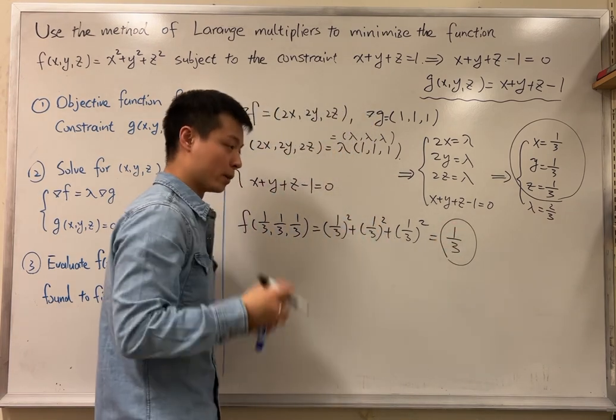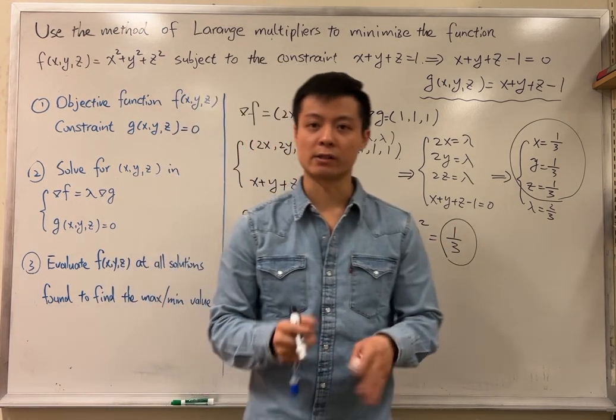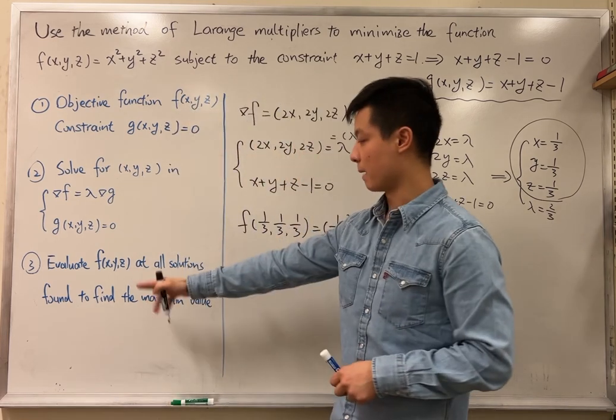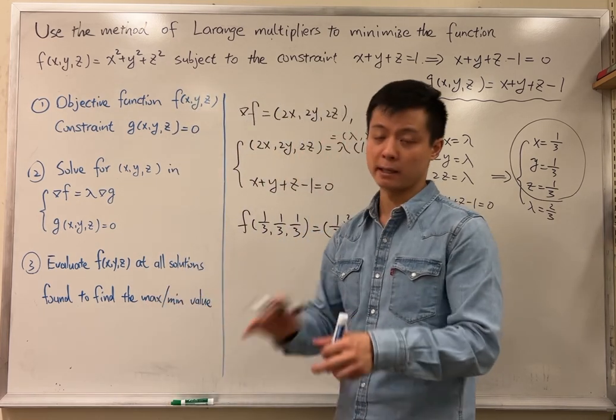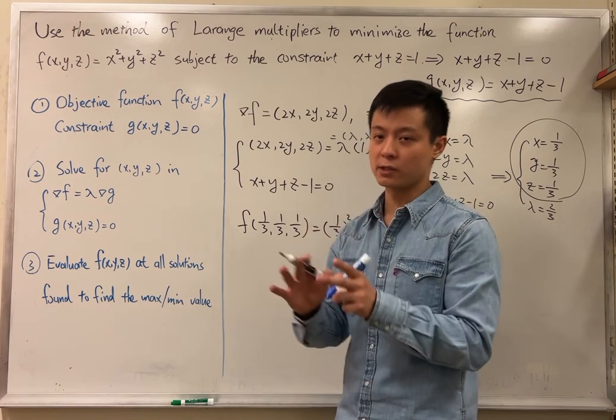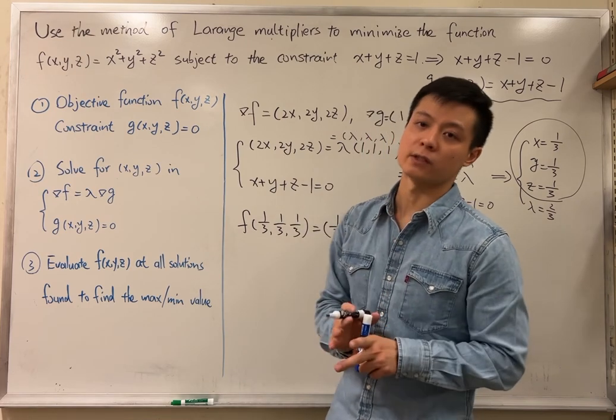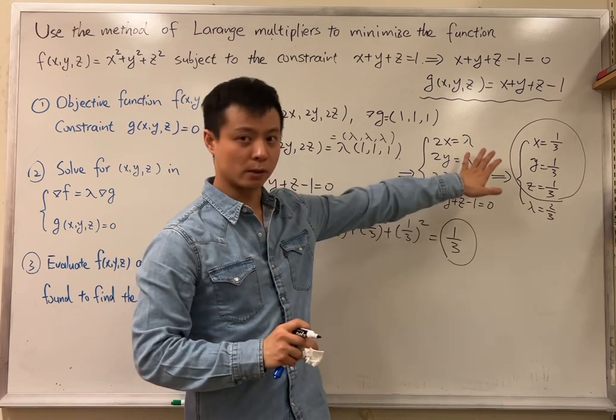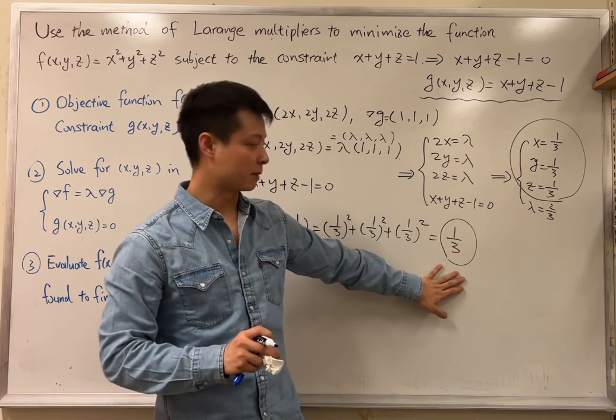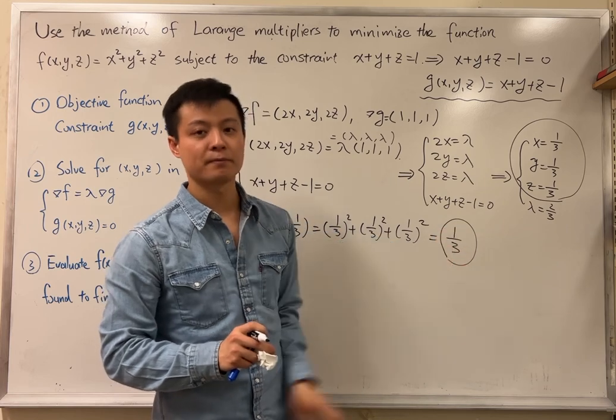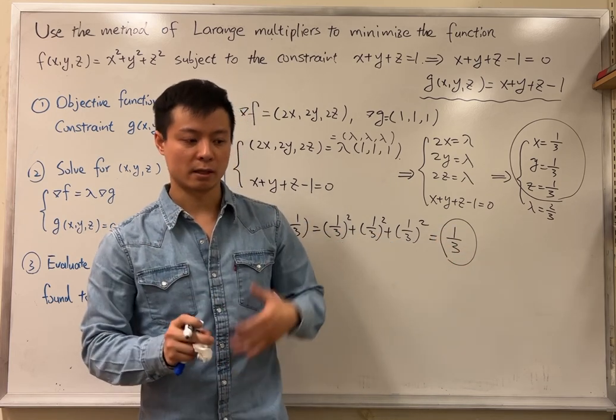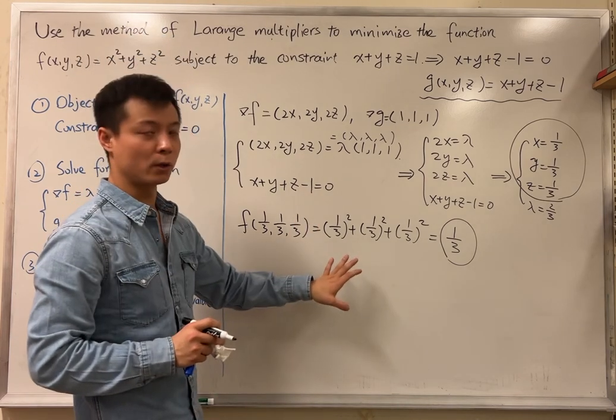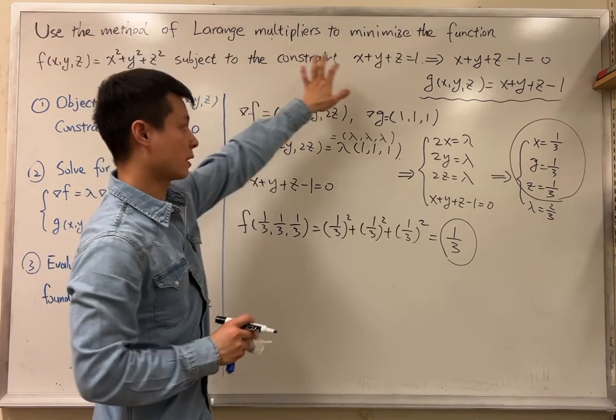And step three says we are supposed to evaluate all the solutions to find out which one is the max, which one is the min, by comparing the outputs. But since we have only one set of solutions here, we don't really know whether this set of solutions gives us the maximum output or minimum output. So we're going to have to choose another point, which is called a reference point, that satisfies the constraint.